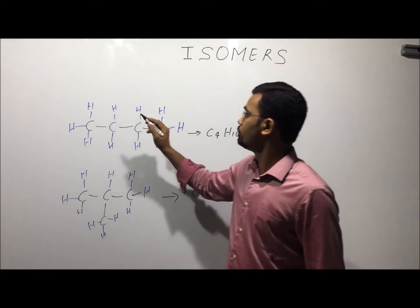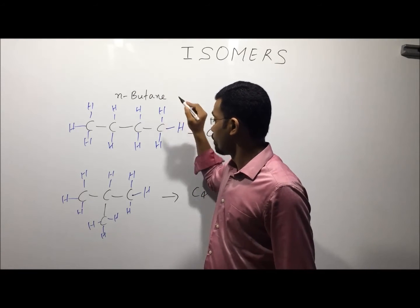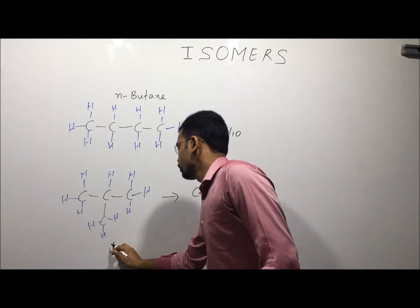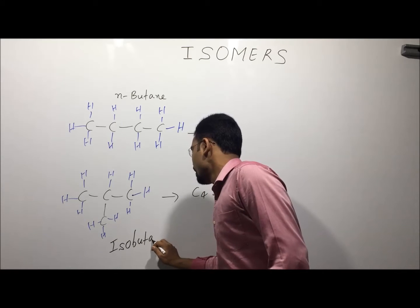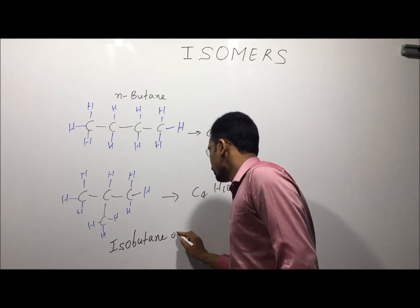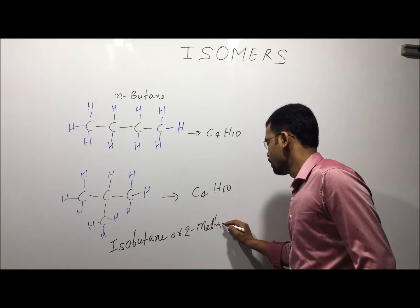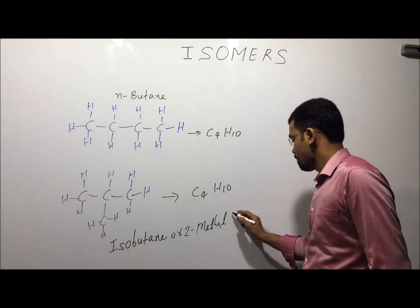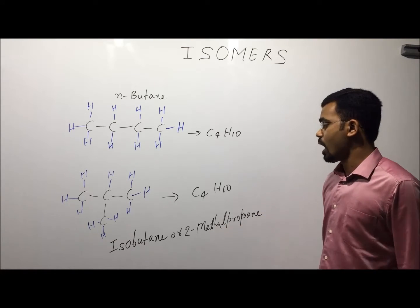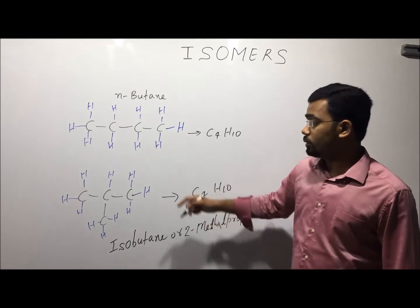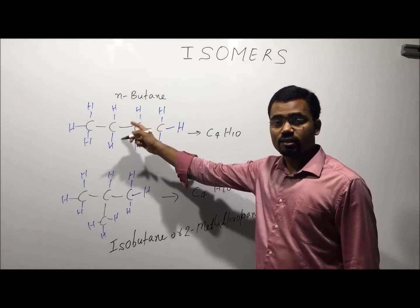So this compound is normal butane, while this is isobutane, or 2-methylpropane according to IUPAC nomenclature. Both compounds have the same molecular formula C4H10.